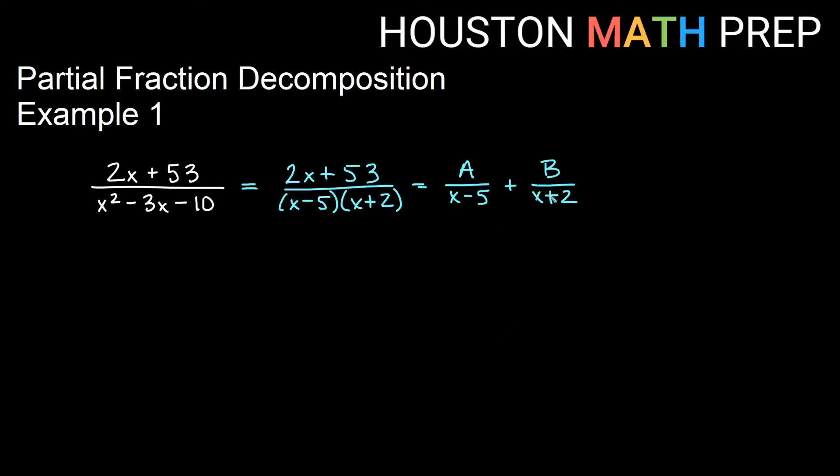Short version, we'll get a common denominator here, and then we'll only solve the numerators. So I'm only going to worry about what the numerators would be when we get a common denominator. Since I already have a common denominator here, my numerator is going to stay 2x plus 53.